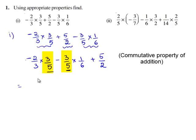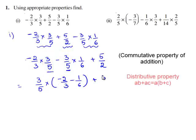So, we bring out 3 by 5 using the distributive law. 3 by 5 times minus 2 by 3 minus 1 by 6 plus 5 by 2.